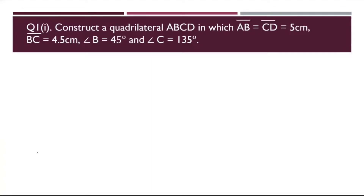Hello everyone. We are doing the first question, first part of worksheet 4 of the constructions chapter of class 8. We have three sides given to us and the angles containing one of these sides are also given to us. I need to construct the quadrilateral ABCD in which AB equals CD equals 5 cm, BC equals 4.5 cm, angle B is 45° and angle C is 135°.